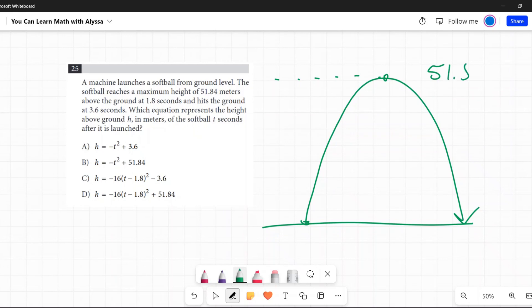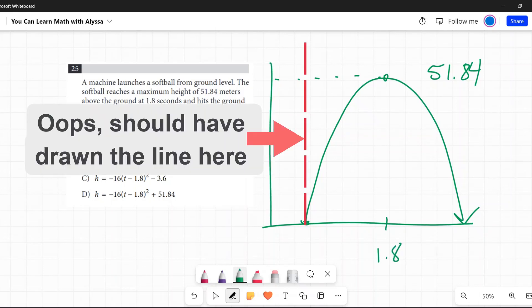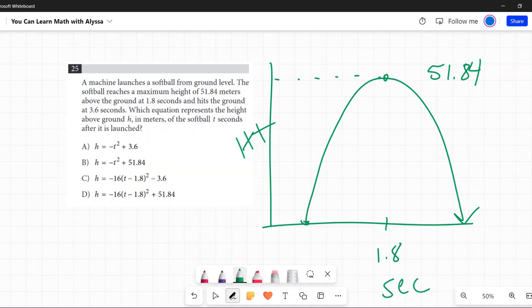51.84 meters at 1.8 seconds. This is going to be my seconds, very similar to this is going to be my height. Down here is going to be my seconds, very similar to a previous problem as far as our setup. And it hits the ground at 3.6 seconds.